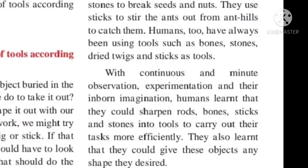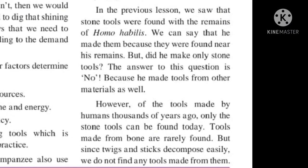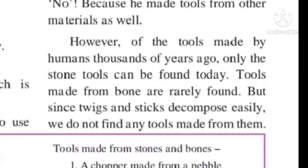In the previous lesson we learned that Homo habilis made stone tools. It is believed that Homo habilis made stone tools as well as tools from other materials. But of all the tools made by humans thousands of years ago, only stone tools are found today. Tools made from bones are rarely found, and none made from twigs and sticks are found, as these materials cannot remain for a long time — they get decomposed easily. The stone tools found with the remains of Homo habilis prove this.